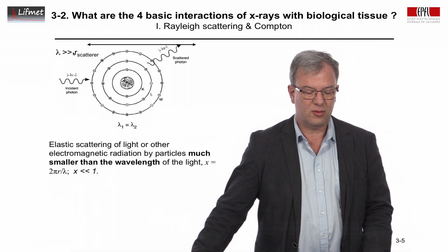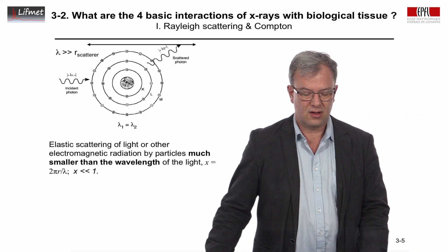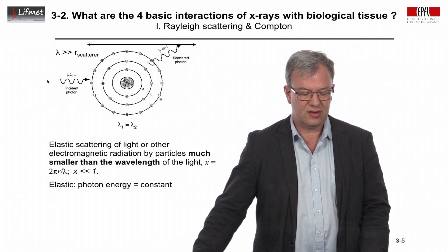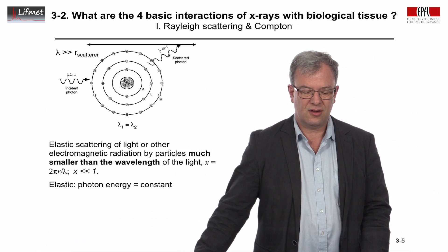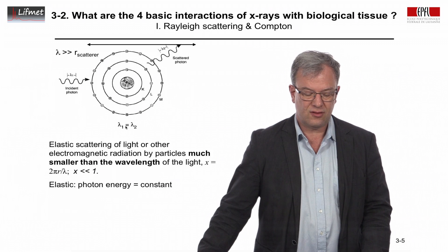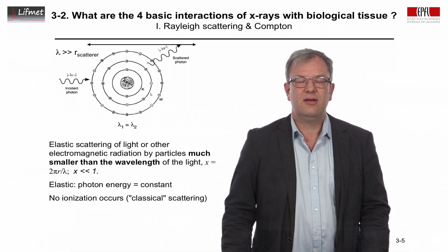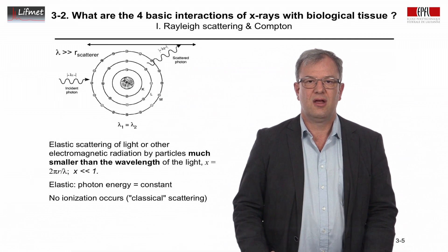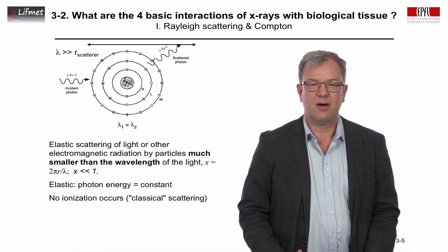In other words, the wavelength has to be much bigger than the radius of the scattering particle. We have elastic scattering, so the photon energy is constant. The incident photon with wavelength lambda 1 is scattered and still has wavelength lambda 2. For Rayleigh scattering, lambda 1 equals lambda 2. Since the photon does not change wavelength, it does not change energy, and therefore it is non-ionizing — it is classical scattering of a wave with a particle.